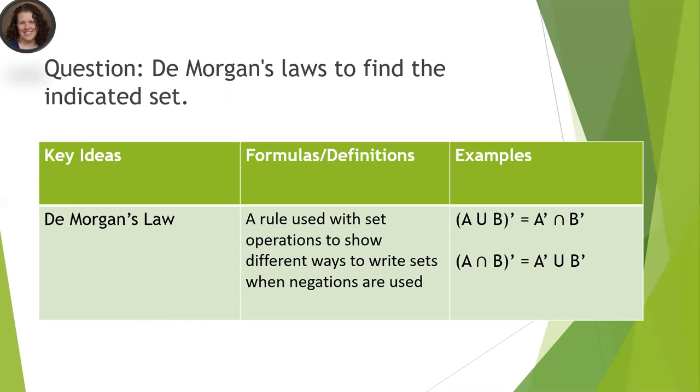So now let's talk about DeMorgan's Law. So it's a rule that's used with set operations to show different ways to write sets when negation is used. So specifically, if you have the set where we're going to have A union B and then you negate it, DeMorgan's Law says you can kind of distribute the negation. So A and B become negated, and then we flip our operations. So instead of having a union here, we flip it.